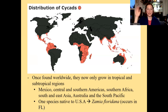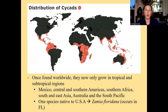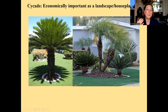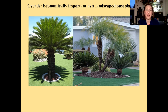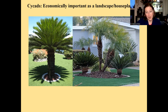Where do cycads live today? Most of the time they grow in the tropics or subtropical regions. On this map, all the pink areas show where cycads occur now in modern times. The majority occur naturally outside of the US, though there is one species that occurs in Florida. You can also buy cycads as a landscape plant or house plant in southern climates like the southern USA, California, or Arizona — places where it stays warm most of the time.